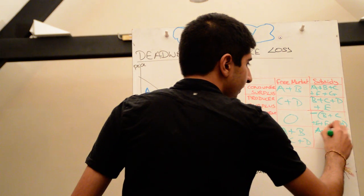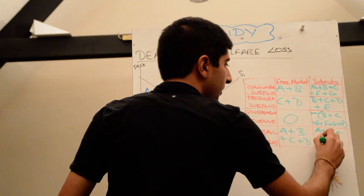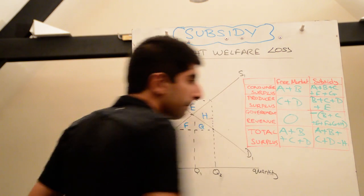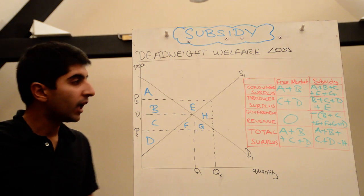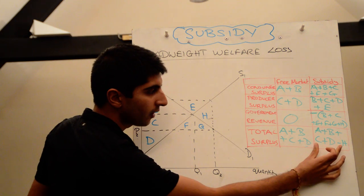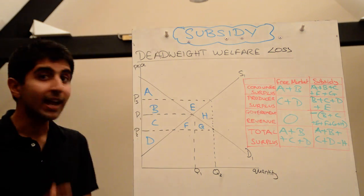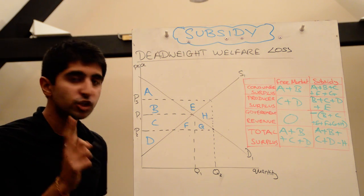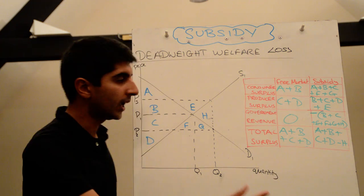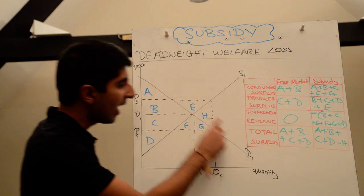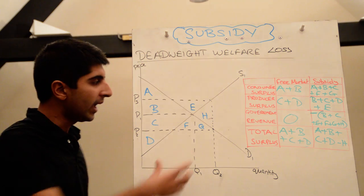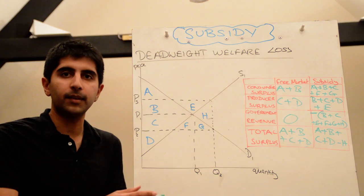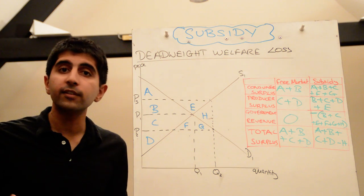The total surplus as a result of the subsidy is now A plus B plus C plus D, but now minus H. So compare the new total surplus to the old total surplus. It's exactly the same, but crucially, we've lost or are losing an area, which is H. H is now unaccounted for.